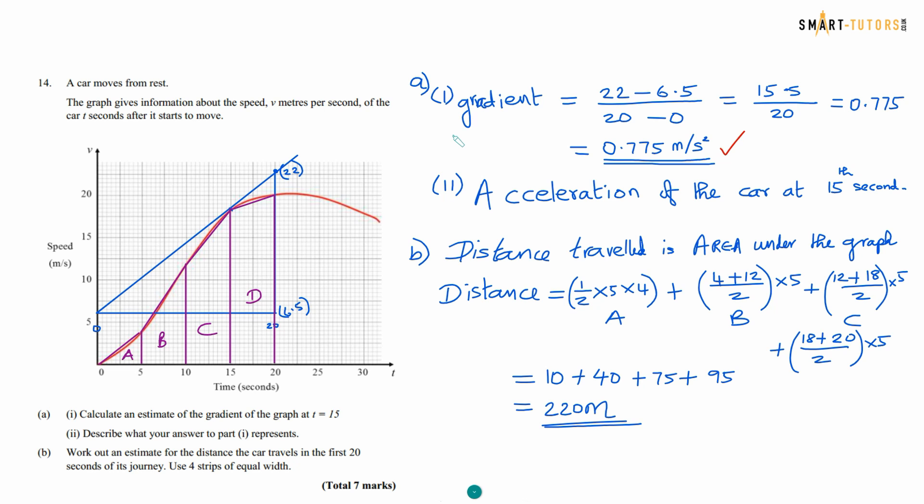Describe what is your answer in the part 1 represent acceleration of the car at 15th second. Part B work out an estimate for the distance the car travels in the first 20 seconds of the journey. So the first 20 seconds of the journey means you divide the section into four parts. So in the four parts one first one is triangle second one is trapezium again trapezium again trapezium. So you find the individual area. So the area under the graph is gives the distance travel. So you find the area and find out the distance. The answer is 220 meter.